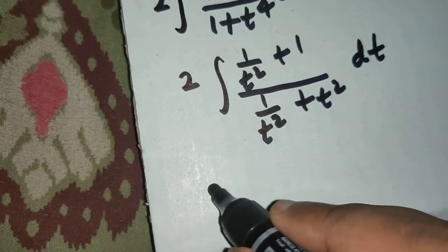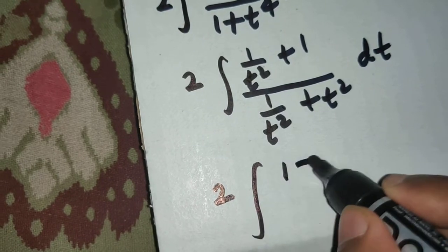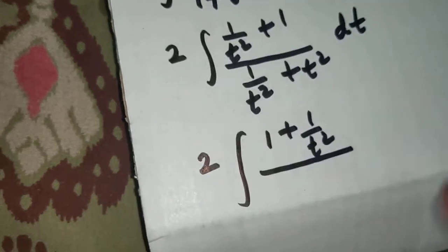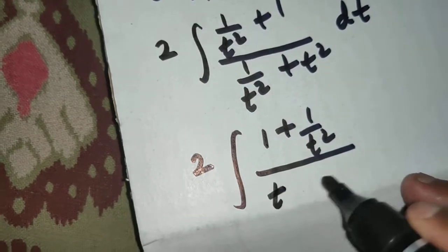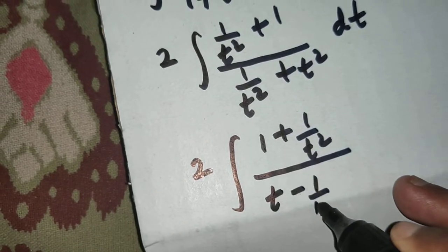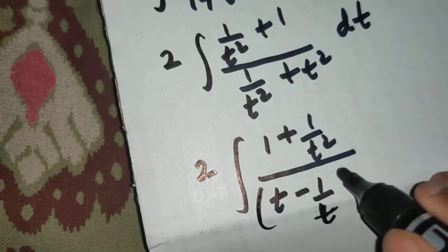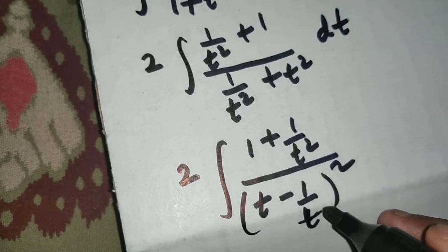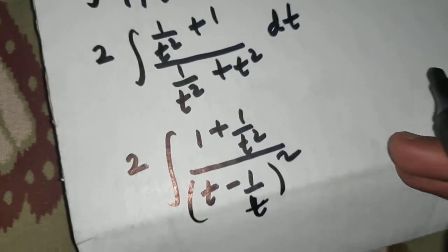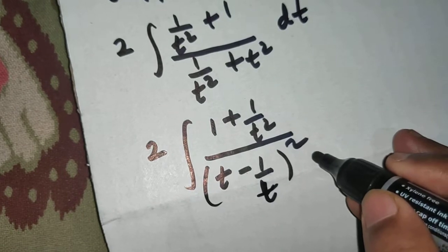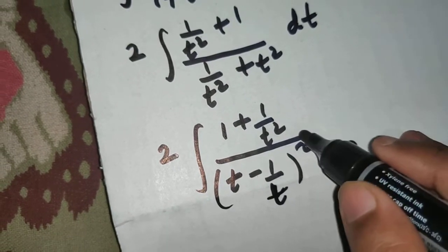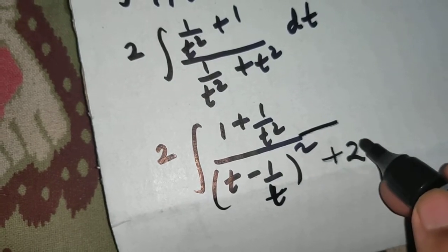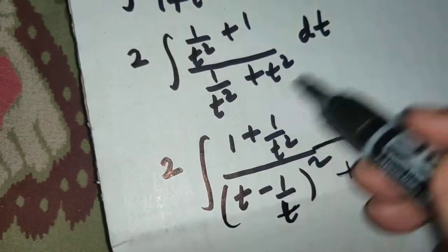Now, looking at the denominator: is it the same as (t − 1/t)²? Expanding (t − 1/t)² gives t² + 1/t² − 2. To balance, I add +2, so t² + 1/t² = (t − 1/t)² + 2. So the denominator becomes (t − 1/t)² + 2.